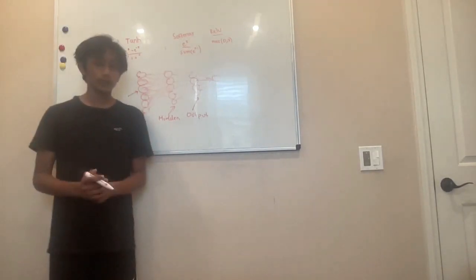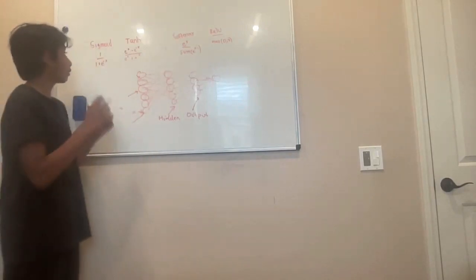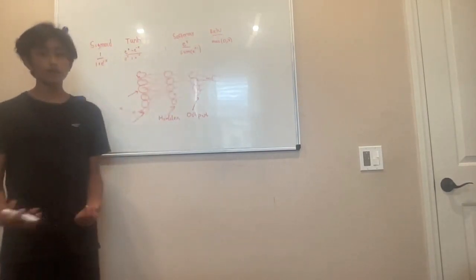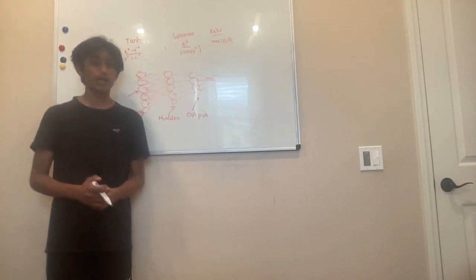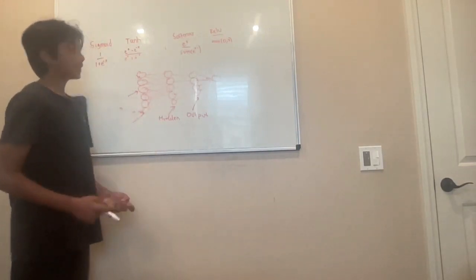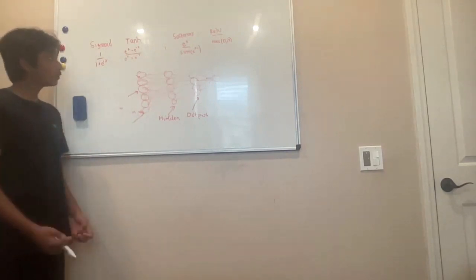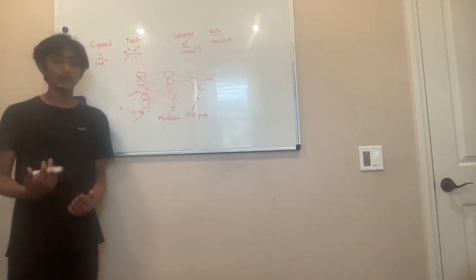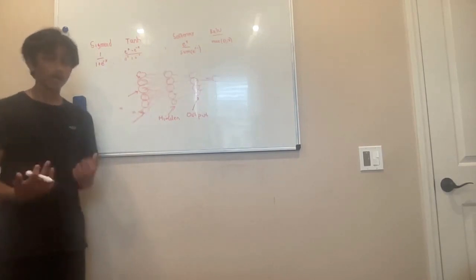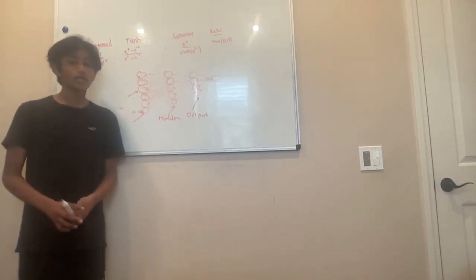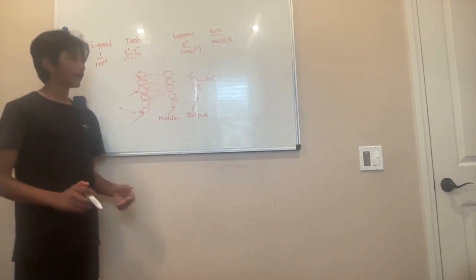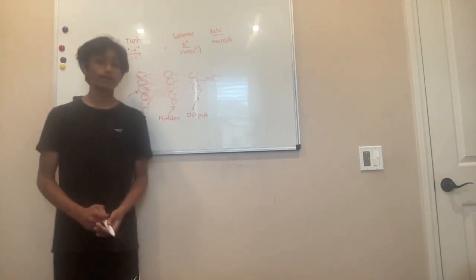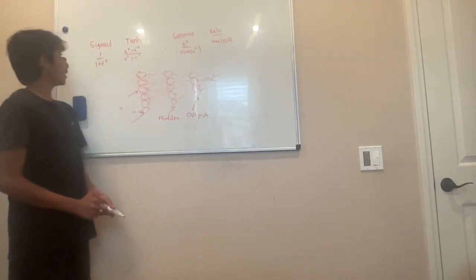Now let's talk about our softmax activation function, which is used for multi-class classification. As you can see, it's a little different from tanh and sigmoid, as it actually uses every other input in its function — and this is why it's useful for multi-class classification. The formula is e to the power of x divided by the sum of e to the power of x times i, where i is every other input. So you go through every single input and get the sum of e to the power of each, then divide.